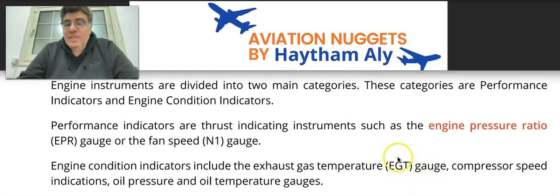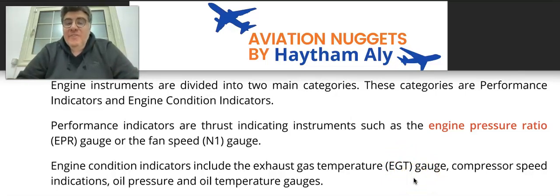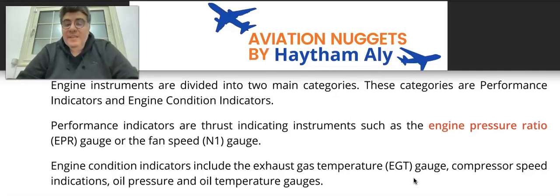EGT — exhaust gas temperature — is also an engine condition indicator. The turbine is the heart of the engine and is manufactured from materials that can only withstand certain temperature limitations. We always need to maintain EGT within limits to ensure the turbine operates in good condition.